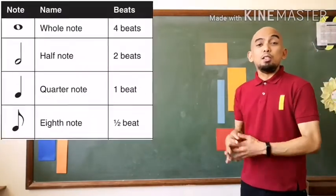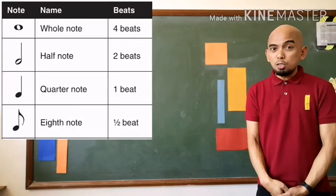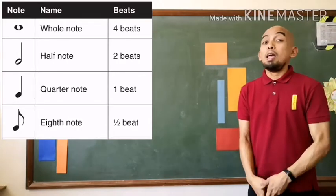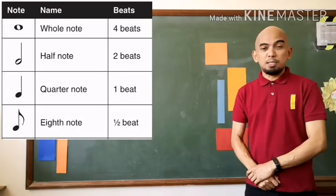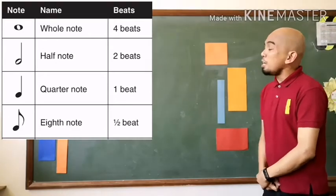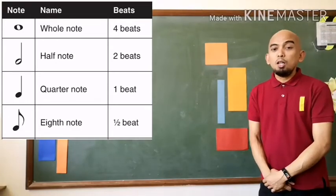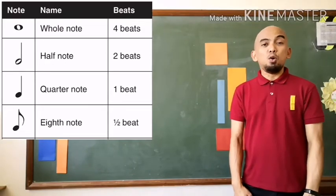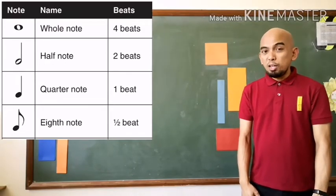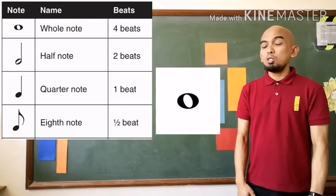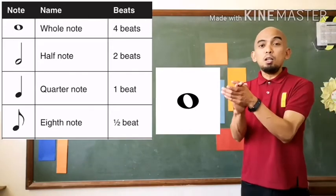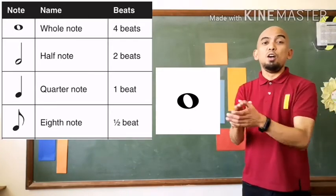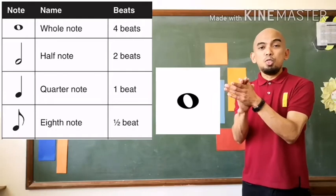Here is a table that shows the names of music notes, their symbol, and value or number of beats. The first one is a whole note. The whole note receives four counts or four beats. If you clap a whole note, it goes like this: one, two, three, four. One, two, three, four.